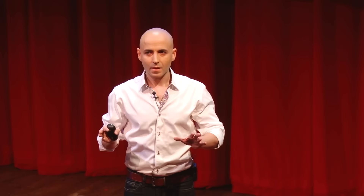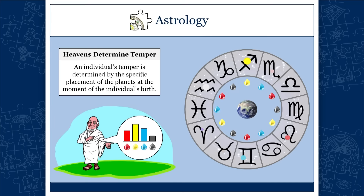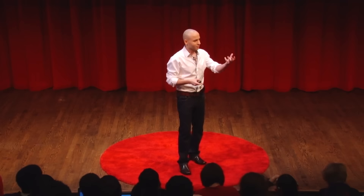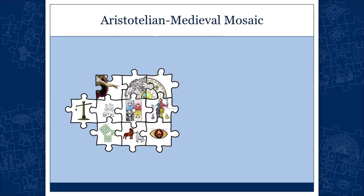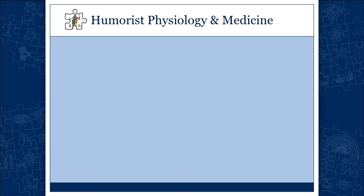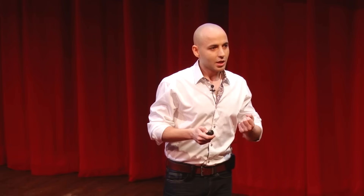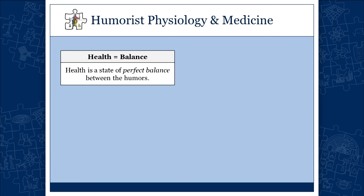There is one more step. Once you accept this, it becomes obvious why physicians must know their astrology. Why would a physician have to learn astrology? Back then, physicians were expected to know their astrology, or at least to collaborate with a professional astrologer. If you ask them what is health and what is disease, they say: health is a state of perfect balance between the humors. When you maintain the balance you are born with, you are healthy. If you have more or less of one humor, you are unhealthy — when the balance is not maintained, you are in a state of imbalance.